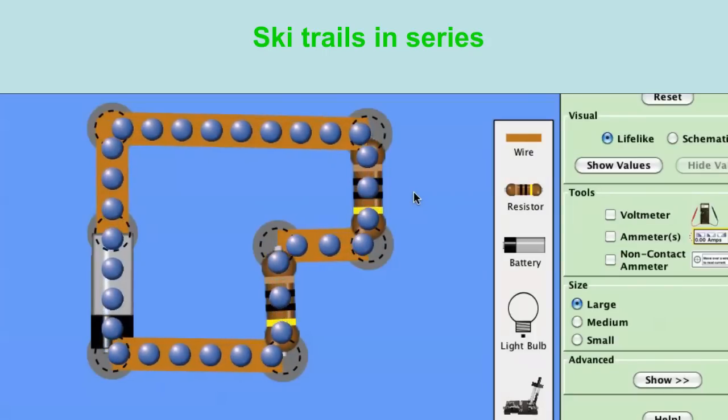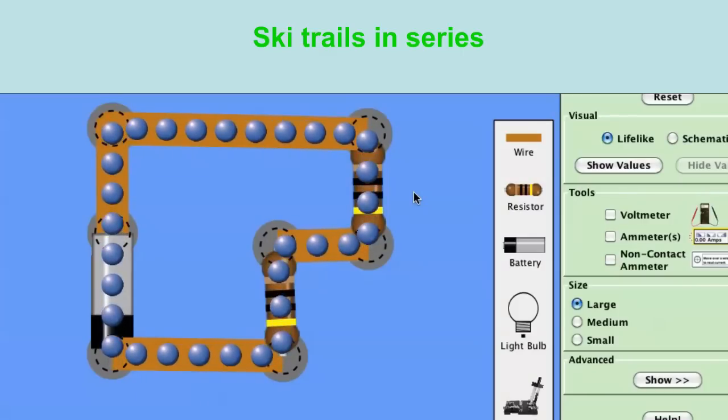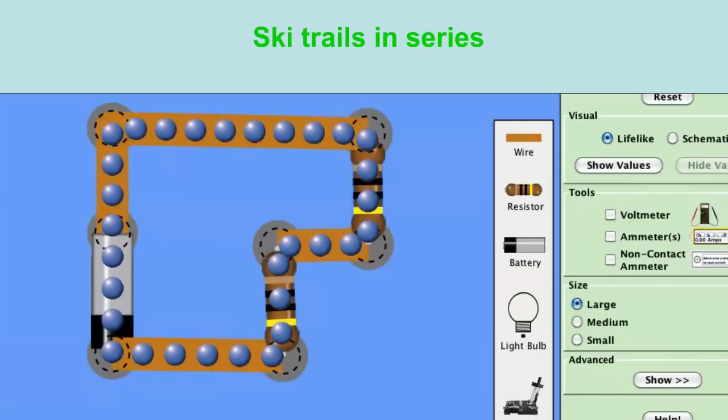And so there's a feedback mechanism and the chairlift shouldn't run as fast so that the skiers don't pile up at the top. Well the same thing happens in circuits. So the charges are not going to flow nearly as quickly around that circuit when you add resistance. So with more resistance the charges do not flow as fast.